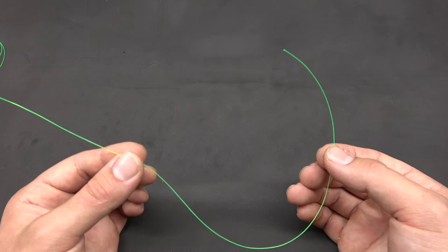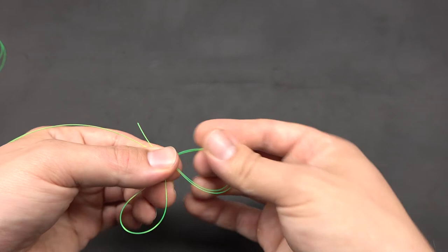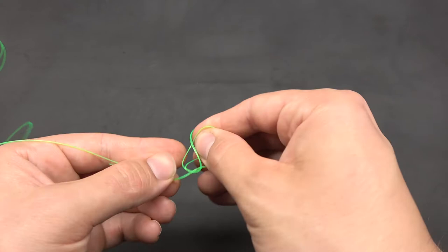We're going to start tying the dropper section by tying a large loop. I always use a figure eight knot for these. Simply go around the back, draw a figure eight around the line, pull tight, and there is your figure eight knot.